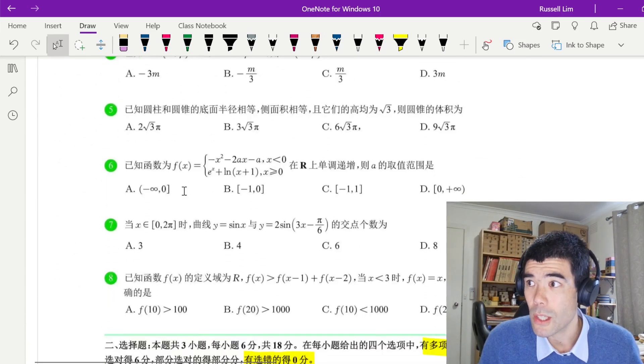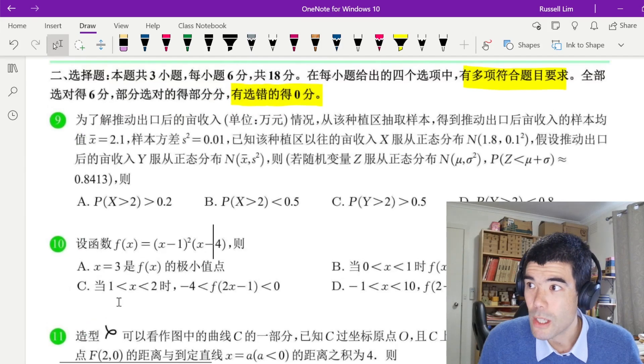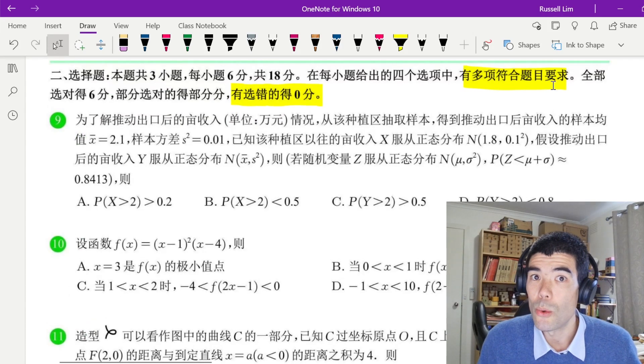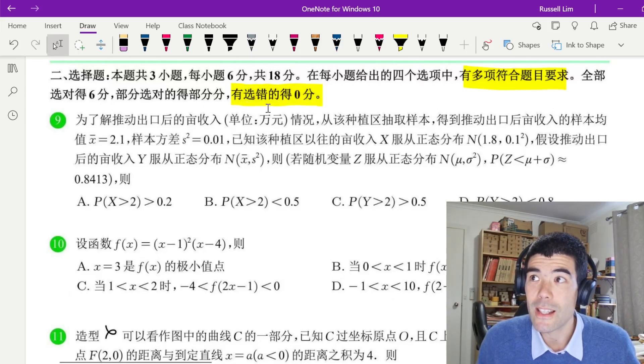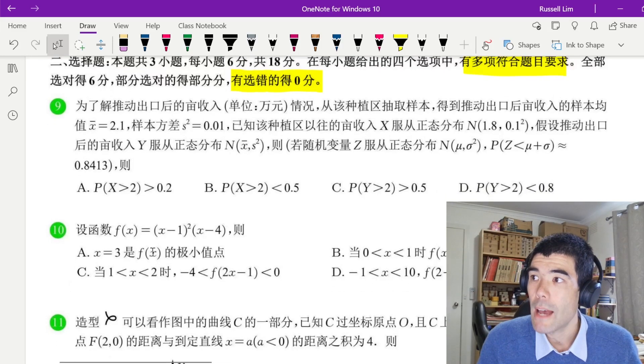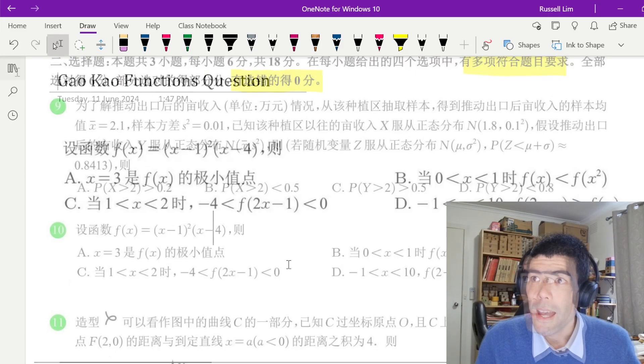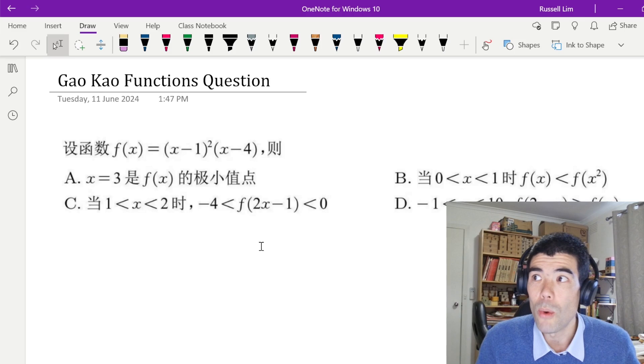We're going to have a look at one of the multi-choice questions, question 10. From what I understand of these questions, there's multiple correct answers, so there's always at least two correct answers. If you get them all correct, you get six points. If you choose some of the correct answers, you get partial marks. If you choose any incorrect answers, you'll get zero marks. So that's kind of ruthless, but I guess that's the way it is. So we're going to have a look at this question with four options, and each of them could be true or false, so it's sort of like four little true-false questions in one.